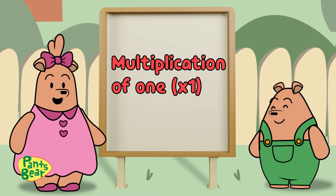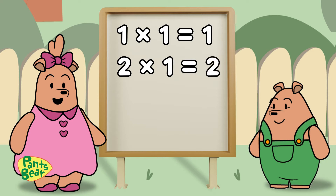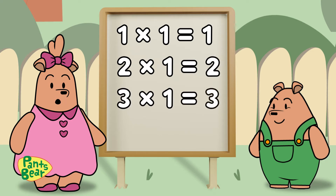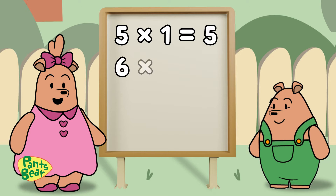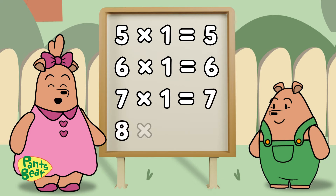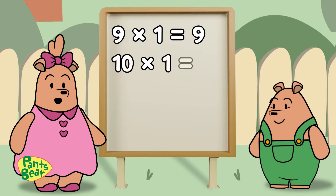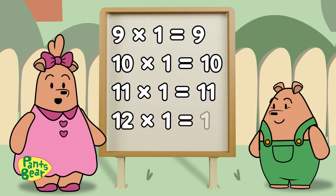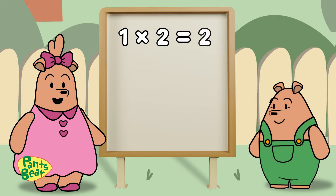Let's start with the multiplication of 1. 1×1=1, 2×1=2, 3×1=3, 4×1=4, 5×1=5, 6×1=6, 7×1=7, 8×1=8, 9×1=9, 10×1=10, 11×1=11, 12×1=12.